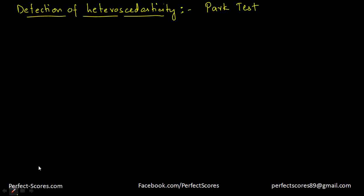I suppose you already know what heteroscedasticity is and how it affects your linear regression estimators. Now we have to actually detect heteroscedasticity in the model. The Park test formalizes the graph method by suggesting that the variance of the error term is actually some function of the independent variable. It also suggests the functional form of that function.